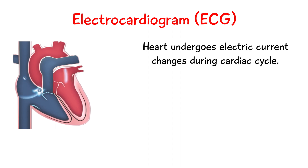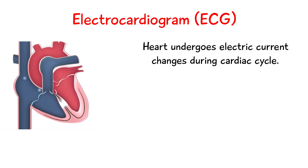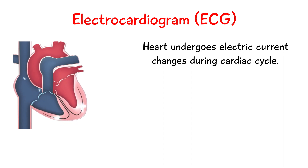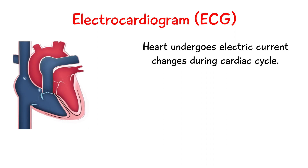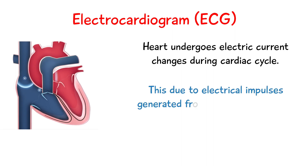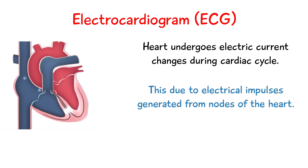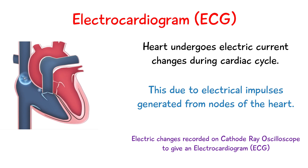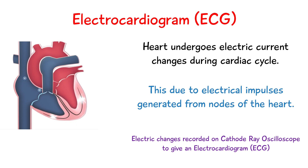During the cardiac cycle, the heart undergoes electrical current changes. This happens because in order for the heart to contract and allow passage of blood, there are electrical impulses generated by the nodes of the heart. If you record and detect these electrical changes on a cathode ray oscilloscope, we get a trace formed which is known as an electrocardiogram.